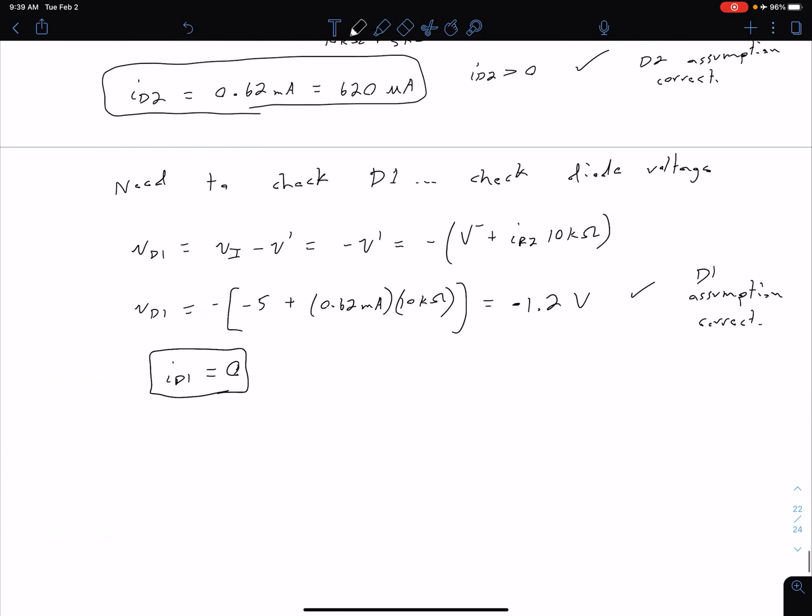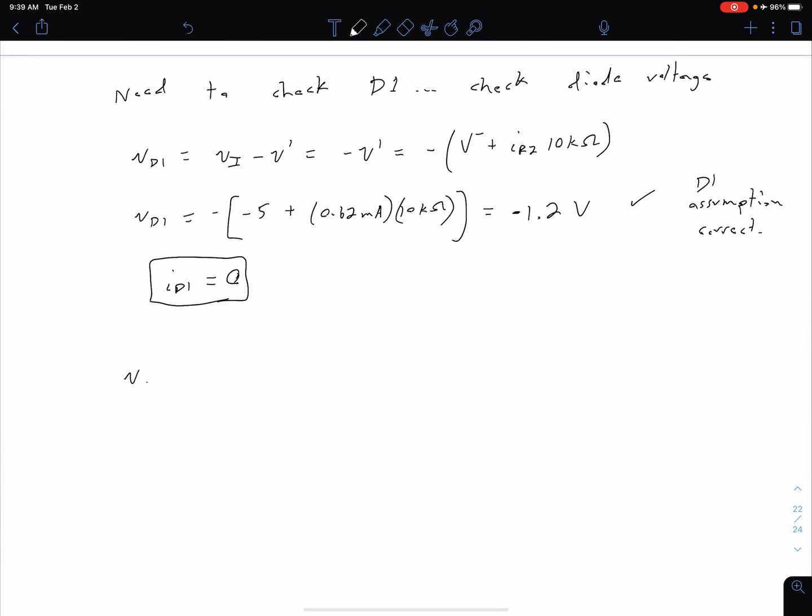Just to be consistent with what I have in the notes, I have that V_out is equal to that V^+ minus I_R1 times the 5k, and plugging in values we have 5 volts minus our 0.62 milliamps times our 5k, and so what we get for that is that our V_out is equal to 1.9 volts.